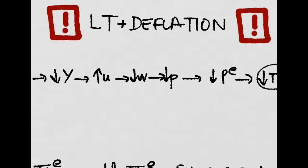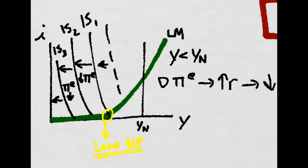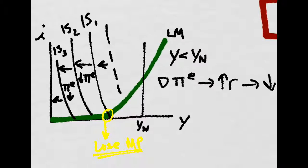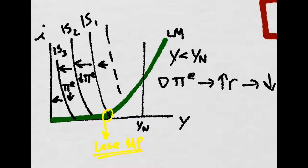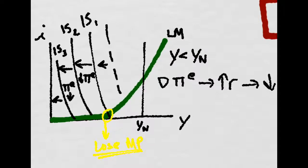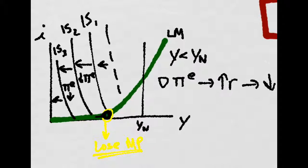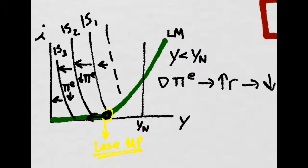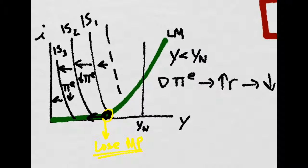So let's now look at the dangerous situation when we have a liquidity trap and deflation at the same time. Now imagine that for whatever reason the IS has gone to the left so much that now we are at a liquidity trap and we have lost our monetary policy.